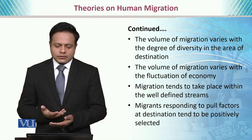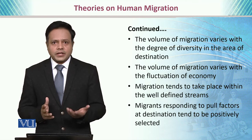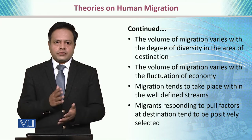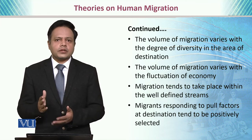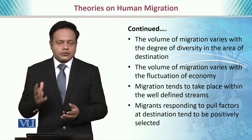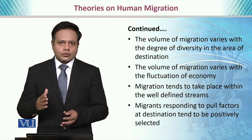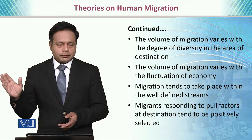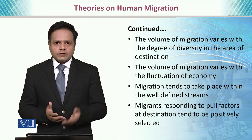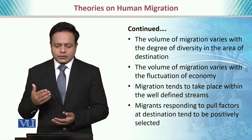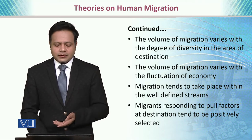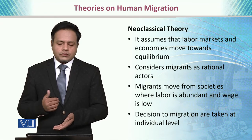Migration also tends to take place within well-defined streams. For example, during the 1970s and 80s, there was a strong trend to migrate to European countries or Middle Eastern countries in search of opportunities for livelihood. Migrants responding to pull factors at the destination tend to be positively selected.